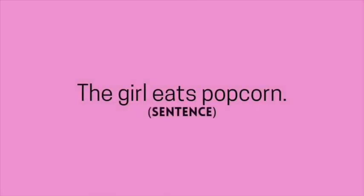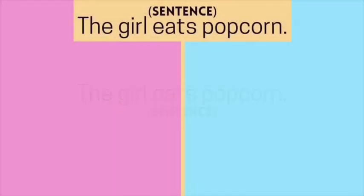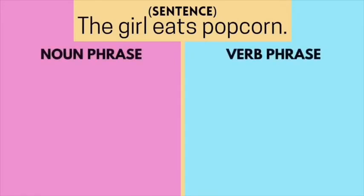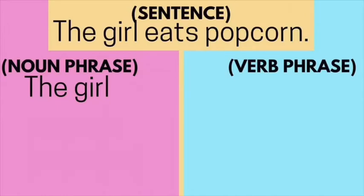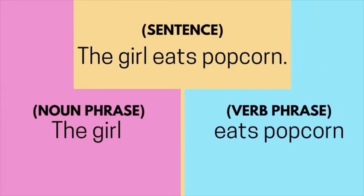The girl eats popcorn. We indicate this as the sentence. Now, we have to divide it into two: the noun phrase and the verb phrase. The noun phrase is 'the girl.' The verb phrase is 'eats popcorn.' The verb phrase always starts with a verb. The noun phrase usually is the subject of the sentence.